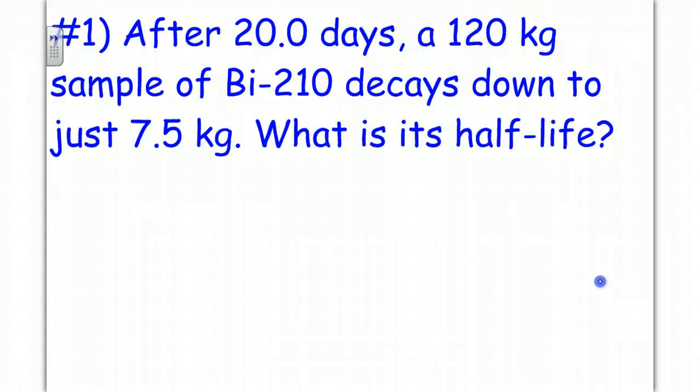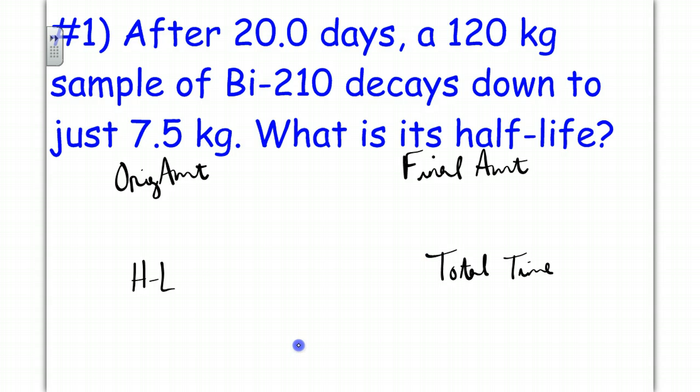So let's do some problems. After 20 days, a 120-kilogram sample of bismuth-210 decays down to just 7.5 kilograms. What is its half-life? It should be important to note that there are five parts to this. We have an original amount, we have a final amount, we have a half-life, which is the amount of time it takes for the isotope to stabilize by half, and then we have what's known as the total time. Something that is not provided for us is the number of half-lives that will occur in this particular problem.